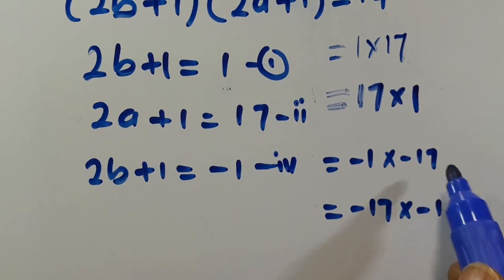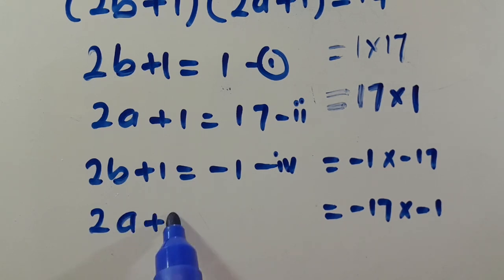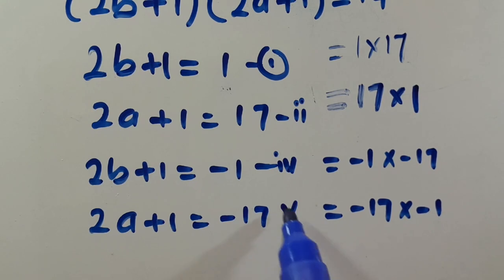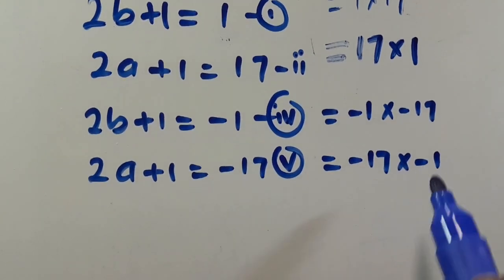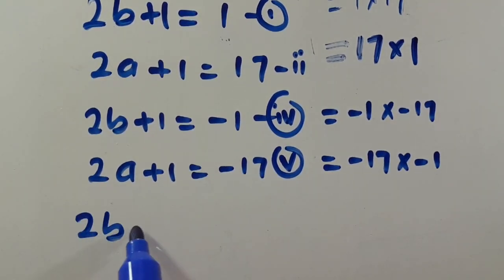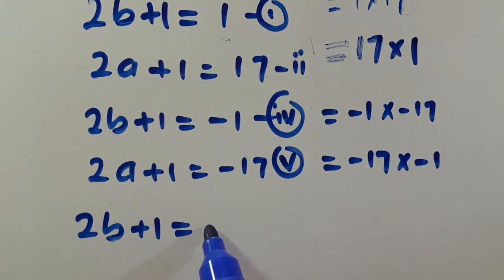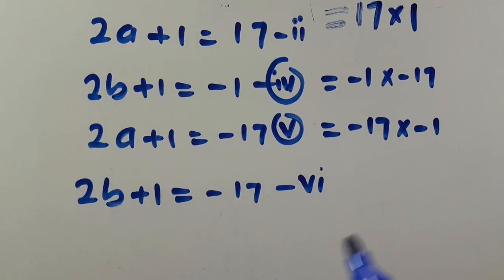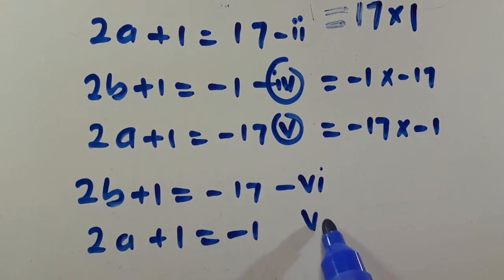Continuing with the negative factorizations: 2a plus 1 equals minus 17 gives equation 5. For the case minus 17 times minus 1, we have 2b plus 1 equals minus 17 as equation 6, and 2a plus 1 equals minus 1 as equation 7.